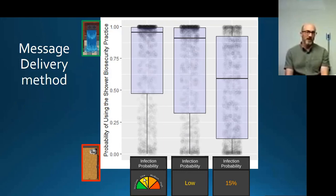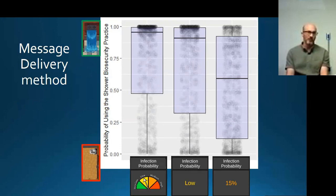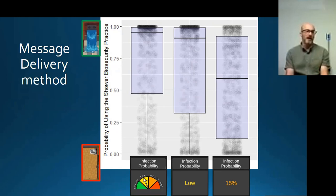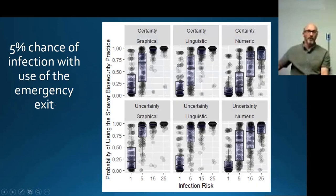Another aspect is how we actually delivered that information about infection risk. If we used a number — like 15% — versus a word like 'low,' versus a threat gauge, people behave very differently. What we found is that if we want good compliance and have more people using biosecurity, we should provide information with a graphical display instead of a number, because people are generally poor at understanding and calculating with numbers.